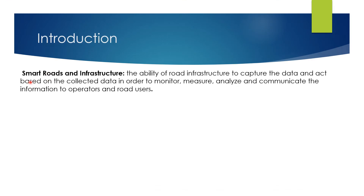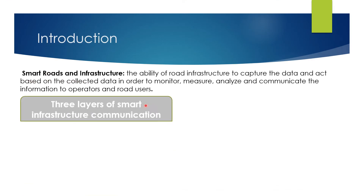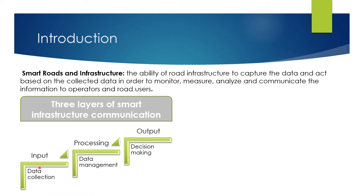As an introduction, the smart road and infrastructure is the ability of road infrastructure to capture data and act based on the collected data in order to monitor, measure, analyze, and communicate the information to operators and road users. There are three layers of smart infrastructure communication: the input, which is data collection; the processing, which is data management; and decision-making as an output of these data.